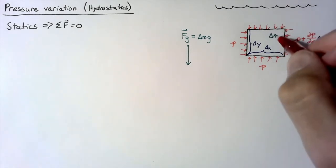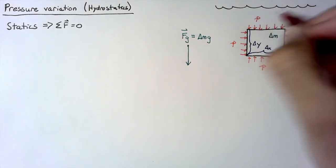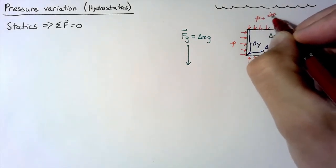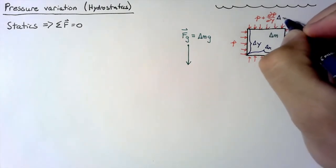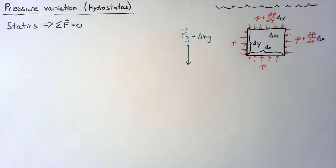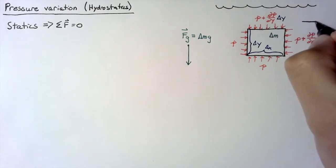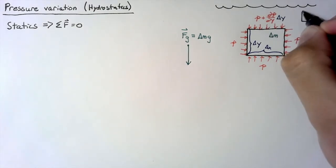And likewise, our pressure in the y direction is going to increase by some dpdy, and since we already have a name, this is going to be multiplied by a delta y. I'm defining x to be moving to the right and y to be moving upward.